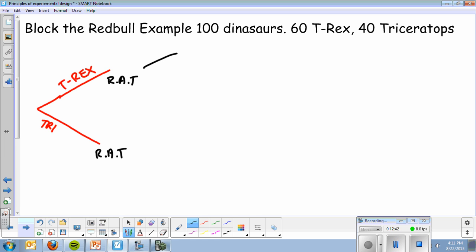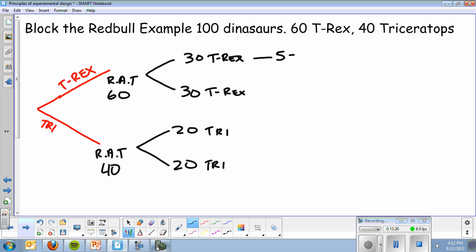There's two groups because we have Red Bull and 5-hour Energy. I happen to have 60 T-Rex. So I'm going to go 30 in group one, 30 T-Rex, and then 30 in group two. And then I have 40 Triceratops. So they're going to be split up into 20 and 20. 20 tries here, 20 tries here. 5-hour Energy and Red Bull. And then I bring that all back together and compare alertness.